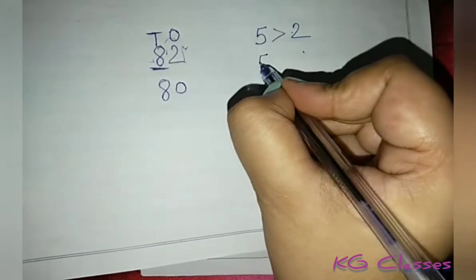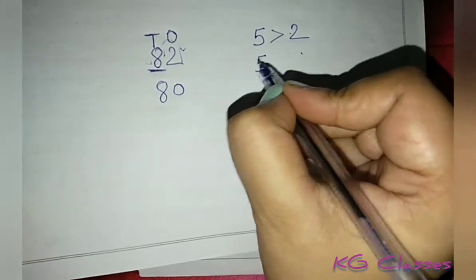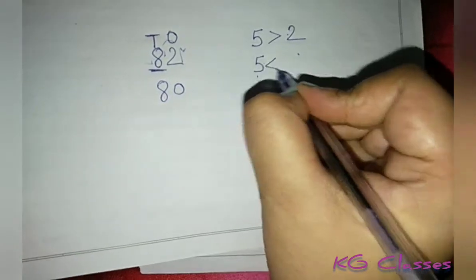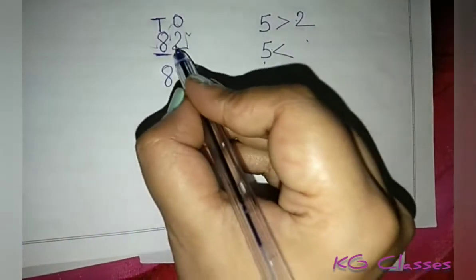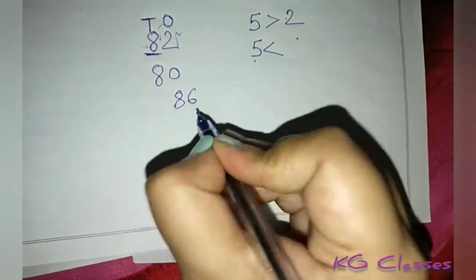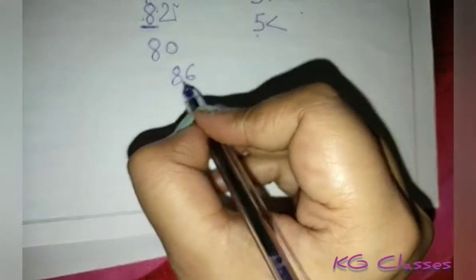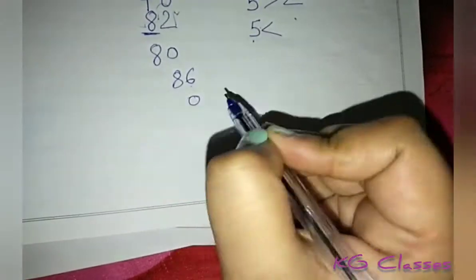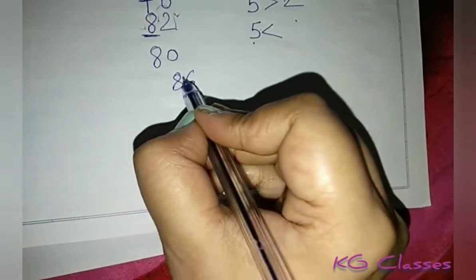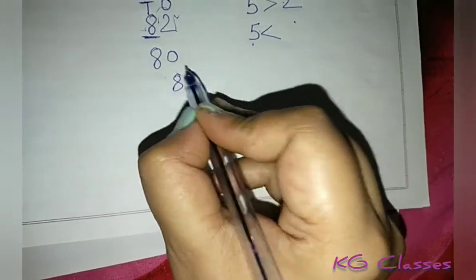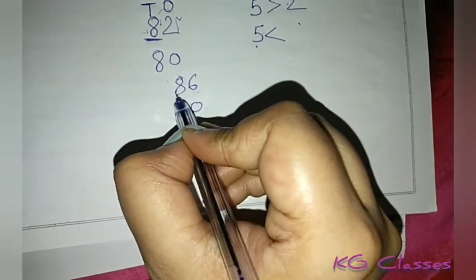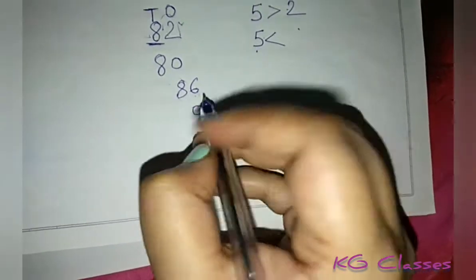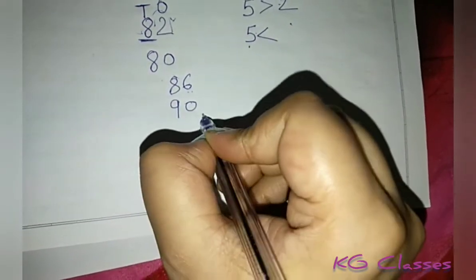But if the ones digit is bigger — for example it is 6, which is greater than 5 — then the ones place becomes 0, but the tens place gets 1 added to it. So 8 becomes 9, making it 90.